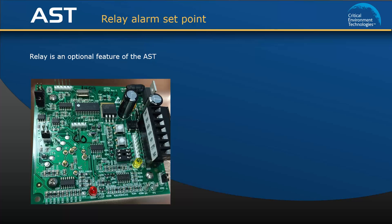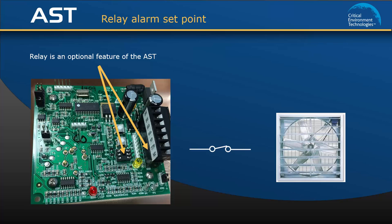The AST may be purchased with an optional relay, and if supplied, the alarm set point can be field adjusted. A relay is a switch that can be configured to turn something on or off, such as an exhaust fan or a remote strobe or horn, when gas reading levels reach or exceed the alarm set point.